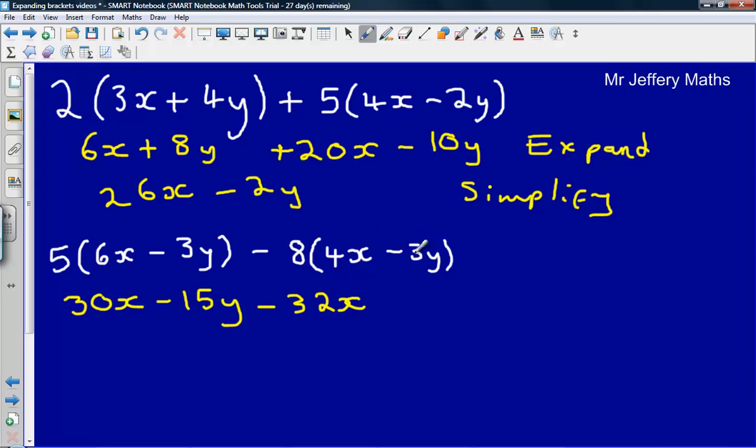Then we've got minus 8 multiplied by minus 3y. Now a negative multiplied by a negative gives us a positive answer. So we've actually got plus 24y for that second part. So we've expanded it here,